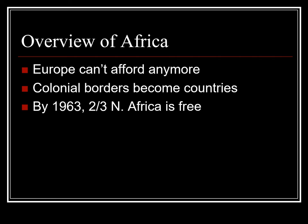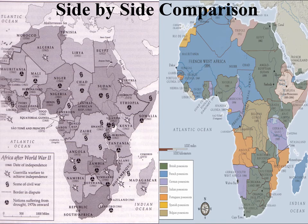Another general statement we can make is that mostly the colonial borders became the newly independent nations' borders. A side-by-side comparison of the high age of European imperialism next to the borders of the independent nations shows that the names changed — from German East Africa or British East Africa to Tanzania and Kenya — but the borders remained the same. The major exception is French West Africa, which was broken into multiple nations.